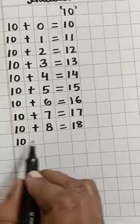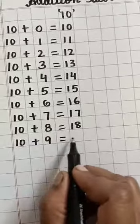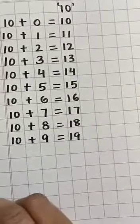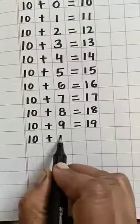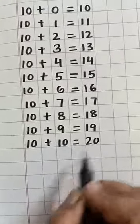10 plus 9 equal to 19. 10 plus 10 equal to 20.